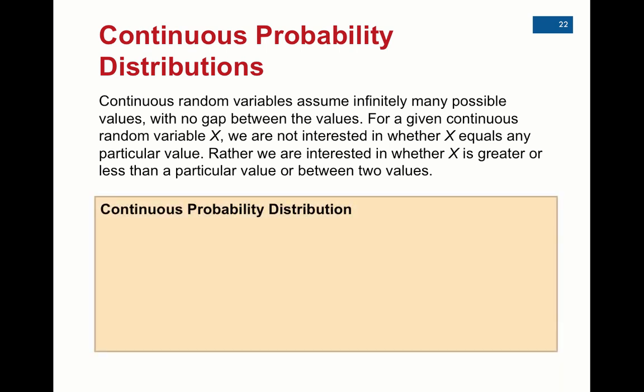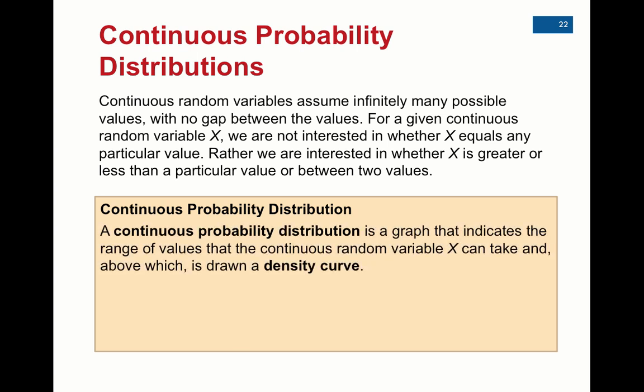The other thing is, since continuous values are very hard to pinpoint, we're not actually going to look at the probability of getting one particular value, but we're going to look at the probability of either being above a particular value, below a particular value, or in between two values. And that's what this says at the end.